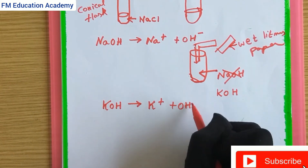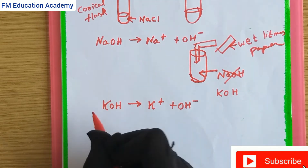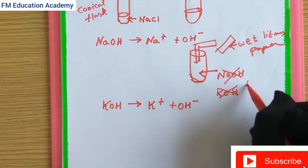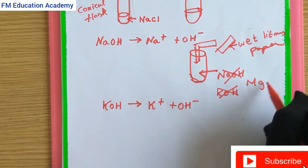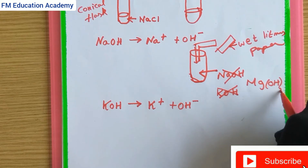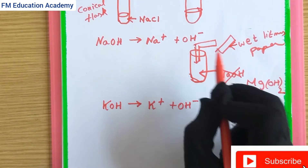Bases generate hydroxide ions in water. Bases that are soluble in water are called alkalis. Some properties of bases are that they are soapy to touch, bitter, and corrosive — they are also dangerous, like strong acids.